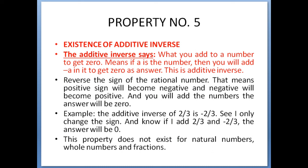Last property is property number 5: existence of additive inverse. This says what you add to a number to get 0. Means if a is the number, then you will add -a to it to get 0 as answer. This is additive inverse.